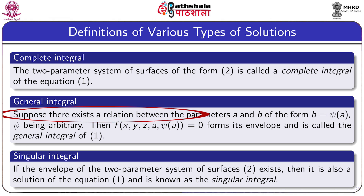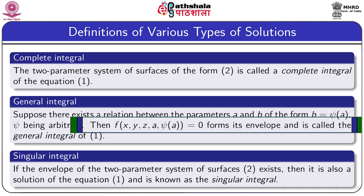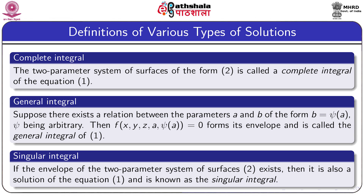Suppose there exists a relation between the parameters a and b of the form b = ψ(a), where ψ is arbitrary. Then f(x, y, z, a, ψ(a)) = 0 is also a solution of the given equation, and the envelope of this one-parameter system constitutes a solution known as the general integral of equation 1.